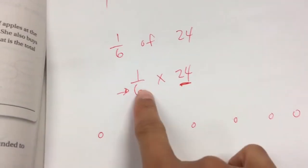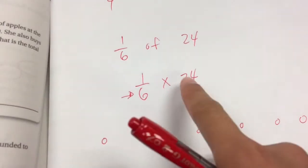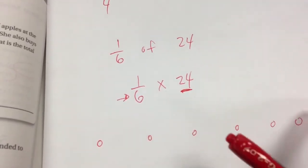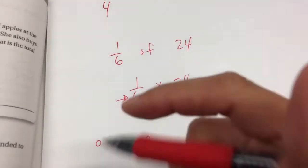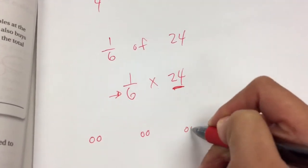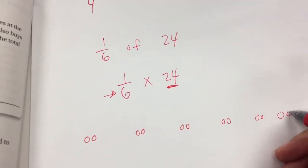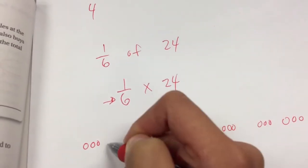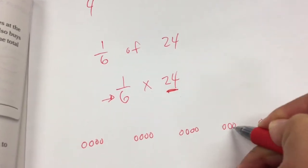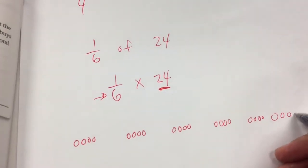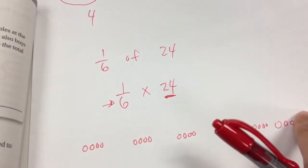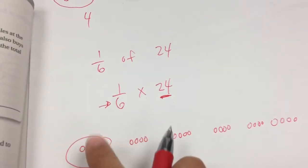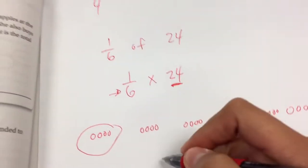I'm going to keep drawing these circles until I hit 24. The sixth denominator shows the different groups — six groups — and I keep adding to them until I hit 24. Each group has four in it. I have one-sixth of 24, so I have one group of this 24. I have four cookies that are chocolate chip. The answer is four here.